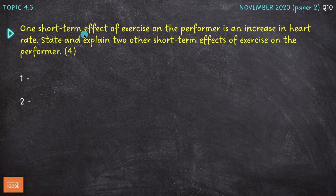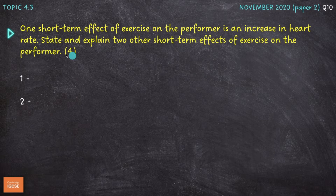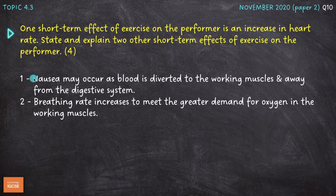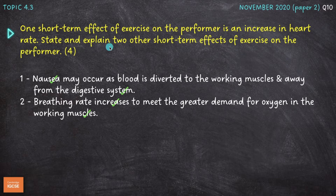One short-term effect of exercise on a performer is an increase in heart rate. State and explain two other short-term effects of exercise on a performer for four marks. We need to state two short-term effects and then explain them. I've gone for nausea as my first short-term effect of exercise, and an increase in breathing rate as the second. That's two marks already — one for each.